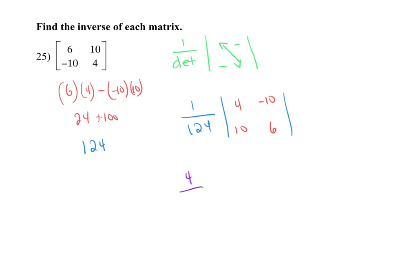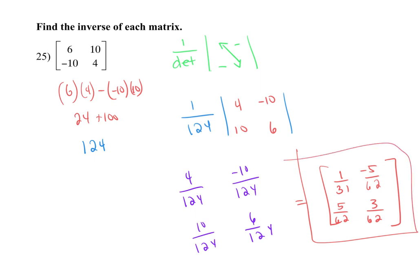Just multiply it through. So I have 4 over 124. Negative 10 over 124. 10 over 124. And 6 over 124. When you are just finding the inverse, you do want to go ahead and reduce. If not, you either want to distribute that guy at the end or you want to reduce at the end because you have common factors there. So we get 1 over 31. So this is my answer right here for that inverse.